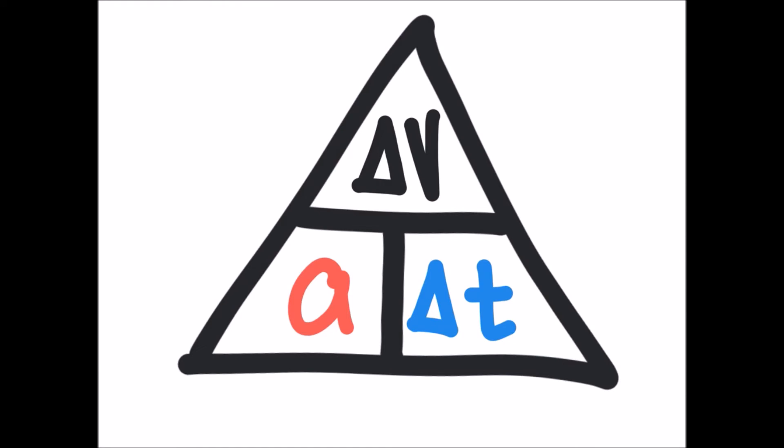Now you can see the triangle we use to represent the acceleration equation. Change in velocity is on top, and acceleration and change in time are on the bottom.